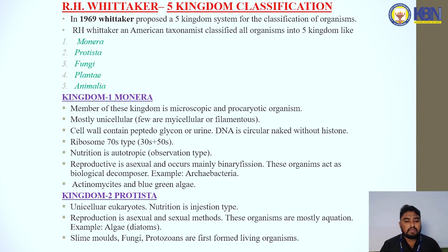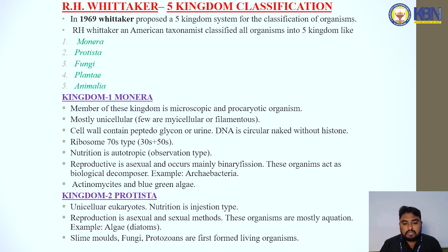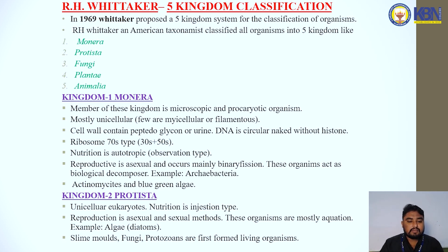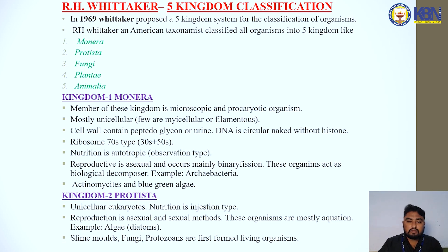Next is Kingdom Protista. These are unicellular eukaryotes. The nutrition is by ingestion. Reproduction is by both sexual and asexual methods. These organisms are mostly aquatic. Examples include algae, slime molds, fungi, and protozoans — considered the first forms of living organisms.